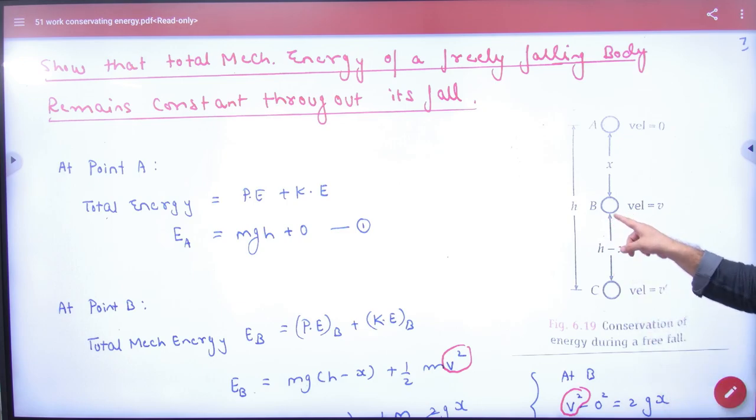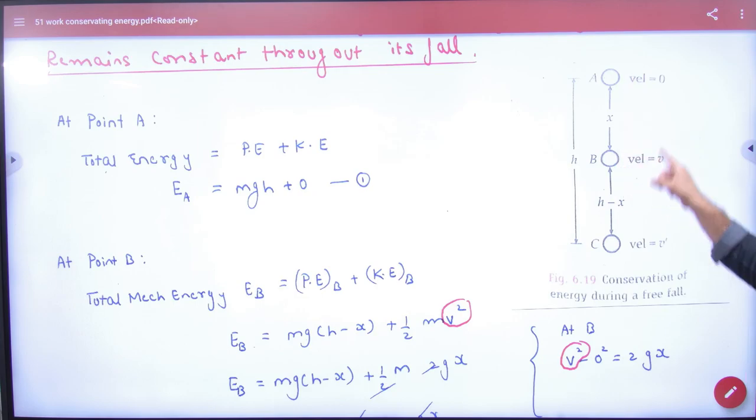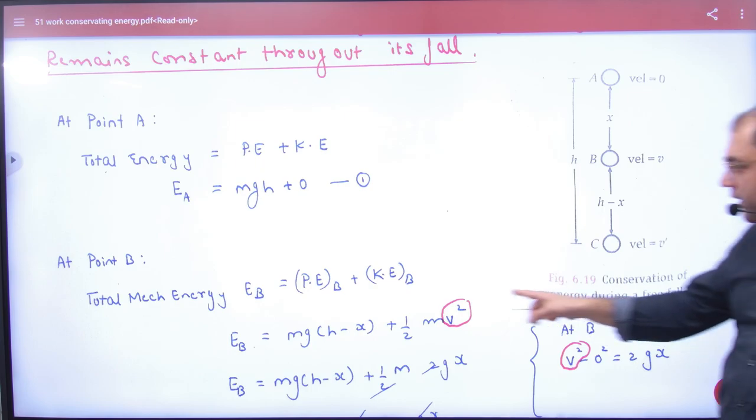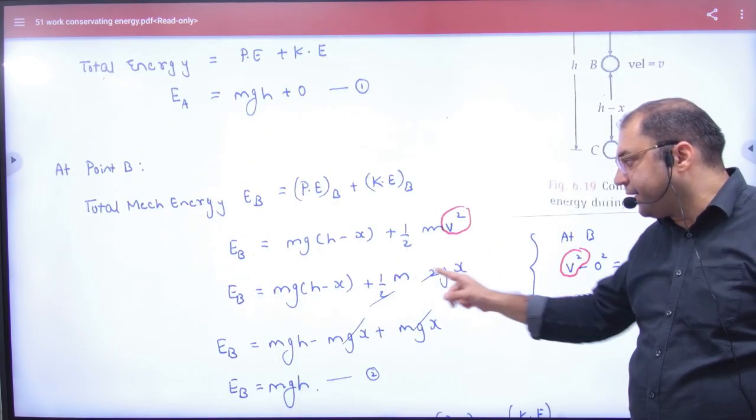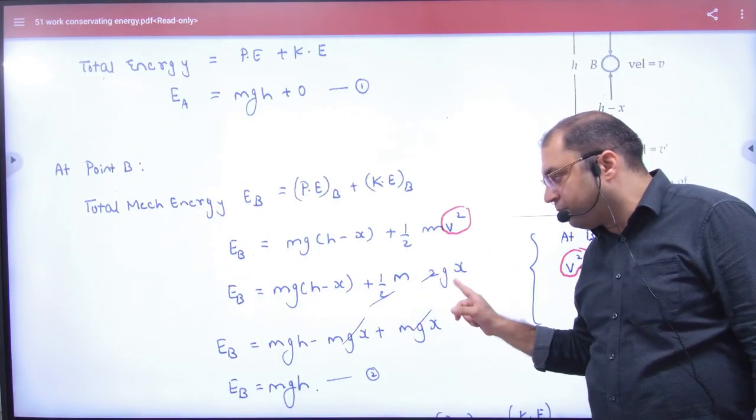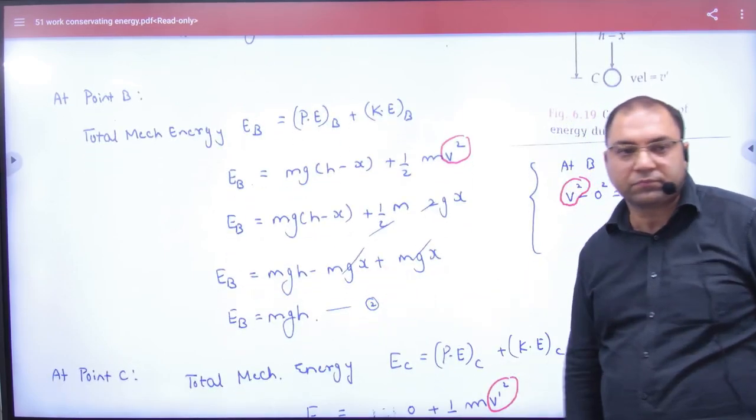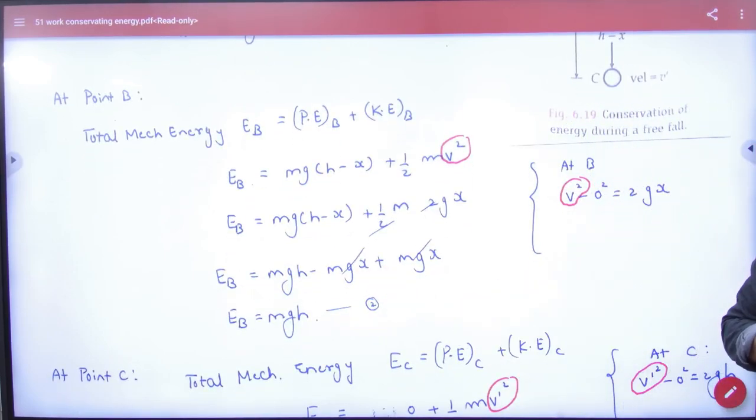So v squared, we apply v squared minus 0 squared is 2gx. Put it here. So this time 2, 2 cancel. Open. Answer: mgh. Right?